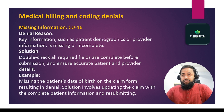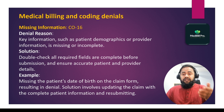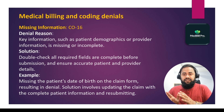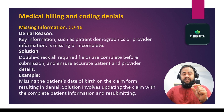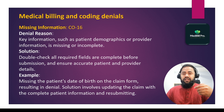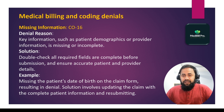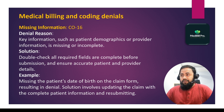For example, if the patient's date of birth is missing or incorrect on the claim form, it results in a denial. If the clearing house sends the claim back due to this error, or the insurance denies it, you need to fix and rectify that error and then resubmit. The solution involves updating the claim with complete patient information and resubmitting.